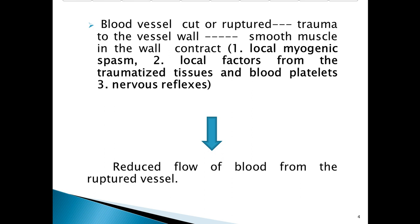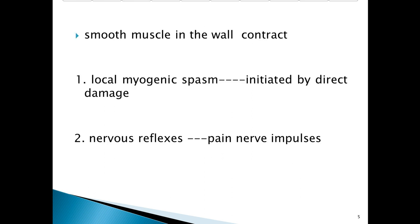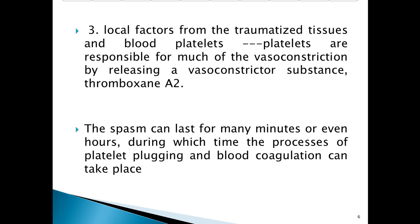When there is vasoconstriction, there is reduced flow of blood from the ruptured vessel. Smooth muscle in the wall contracts due to local myogenic spasm initiated by direct damage, nervous reflexes initiated by pain nerve impulses, and local factors from traumatized tissues and blood platelets. Platelets are responsible for much of the vasoconstriction by releasing the vasoconstrictor substance thromboxane A2. These spasms can last for many minutes or even hours, during which time platelet plugging and blood coagulation can take place.